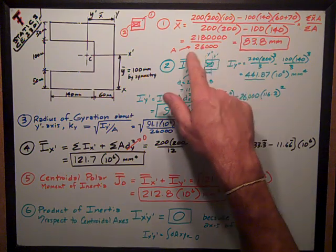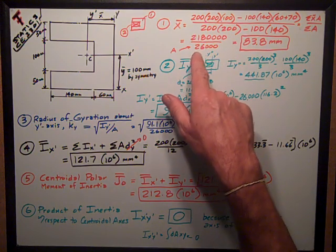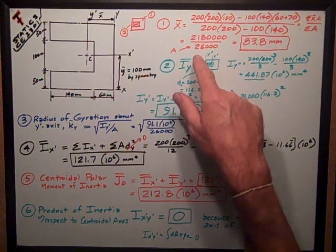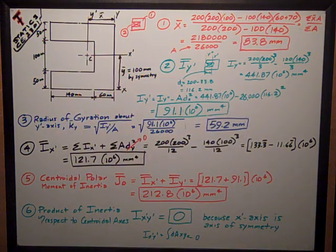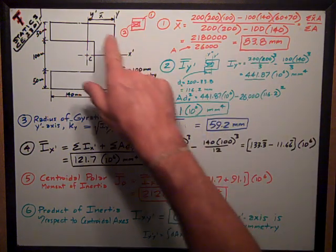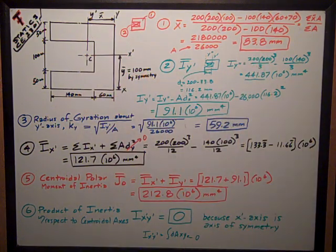So I note that here as I did the math for us, and the area of that thing is 26,000 millimeters squared. Doing that math there, my centroidal distance x-bar is 83.8 millimeters.